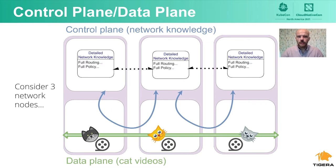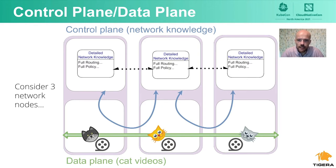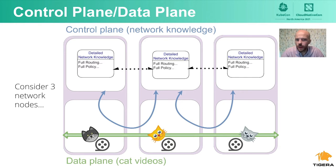The control plane is typically implemented on a general-purpose CPU. It manages complex device and network configuration and state. Routing protocols such as BGP, OSPF, and ISIS are implemented in the control plane. It's necessarily sophisticated software, and that's why it runs on a general-purpose CPU, which is appropriate for workloads that can vary in software complexity.